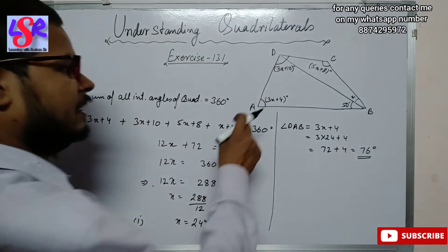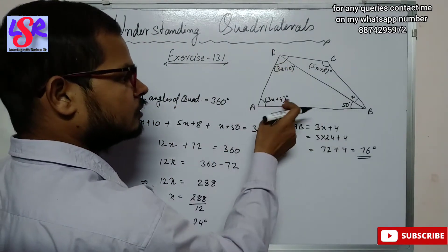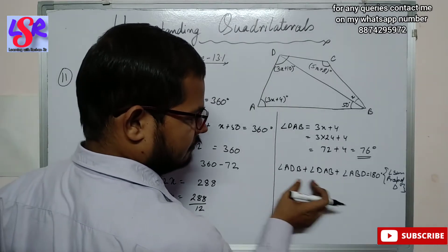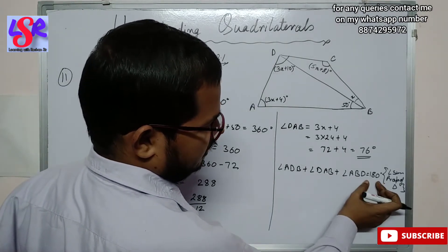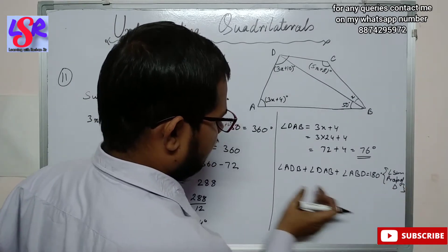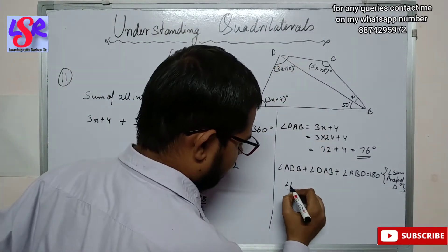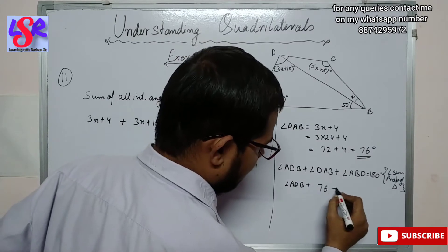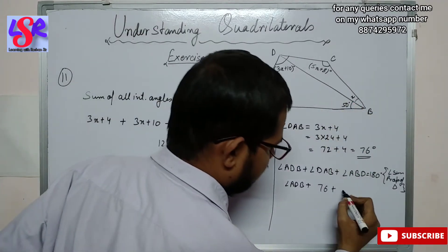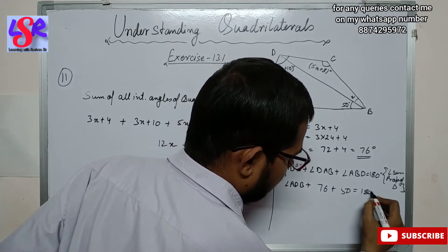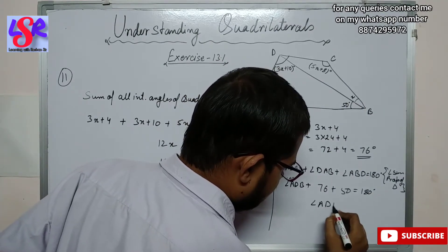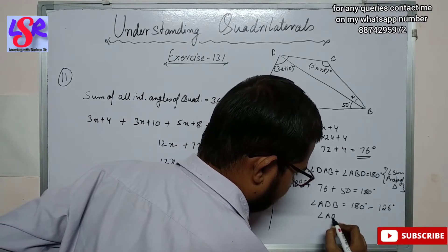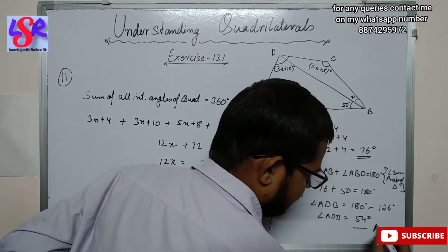After that we have to find angle ADB. In triangle ADB, we know two angles and we will find the third using the angle sum property of triangle. Angle ADB plus angle DAB plus angle ABD equals 180 degrees. Angle DAB is 76 degrees and angle ABD is 50 degrees, so angle ADB equals 180 minus 126, giving angle ADB equals 54 degrees.